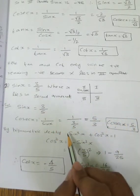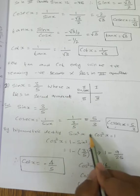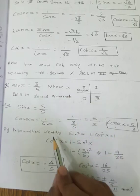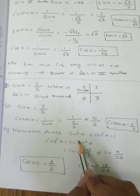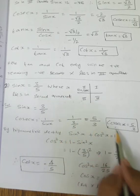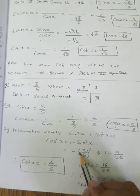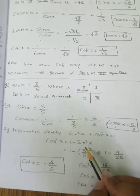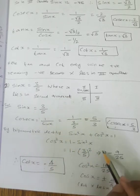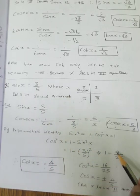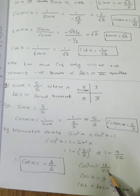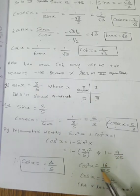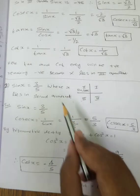Now using the trigonometric identity: sin²x plus cos²x equals 1, so cos²x equals 1 minus sin²x. Sin value is 3 by 5, so the whole square is 1 minus 9 by 25. Simplified: 16 by 25. So cos x equals plus or minus 4 by 5.